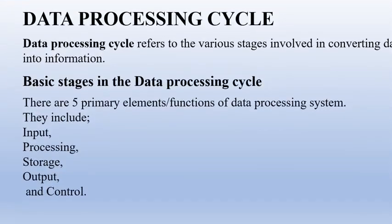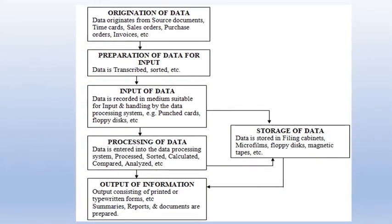The data processing cycle refers to the various stages involved in converting data into information. There are five primary elements or work functions of a data processing system. The data processing cycle follows these stages: input stage, processing stage, storage stage, output stage, and control.